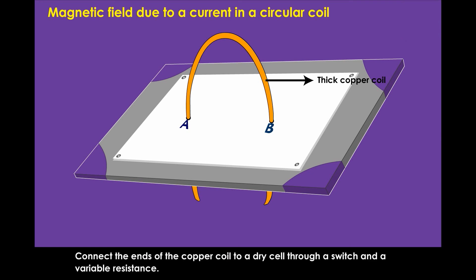Connect the ends of the copper coil to a dry cell through a switch and a variable resistance.